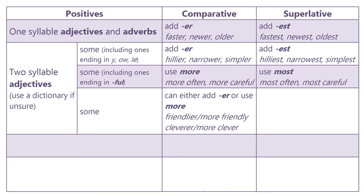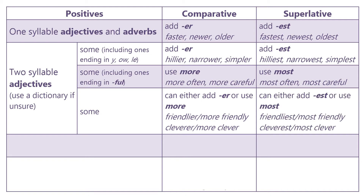Some two-syllable adjectives can use both forms — they can either add ER or use MORE: friendlier or more friendly; cleverer or more clever. For the superlative, you can either add EST or use MOST: friendliest or most friendly; cleverest or most clever.